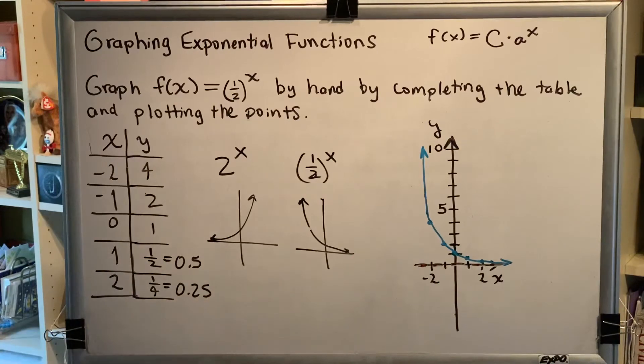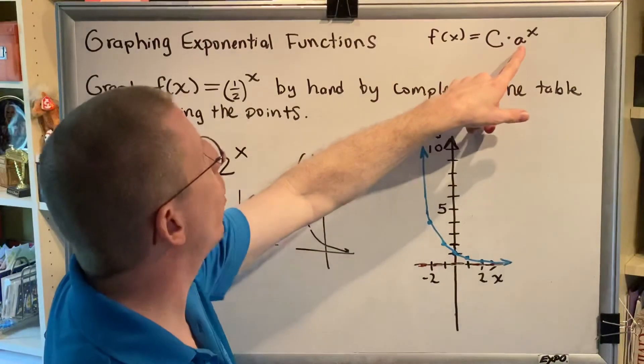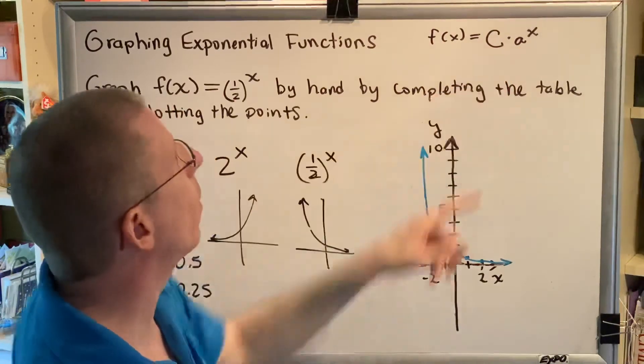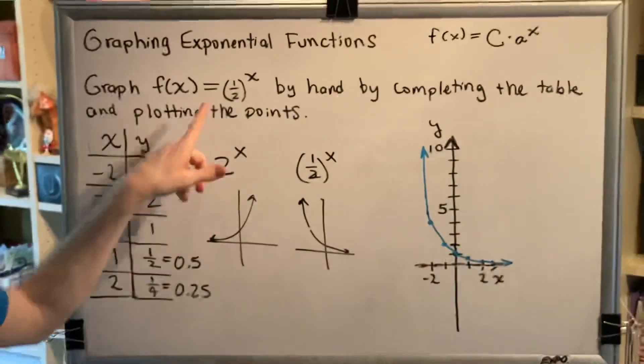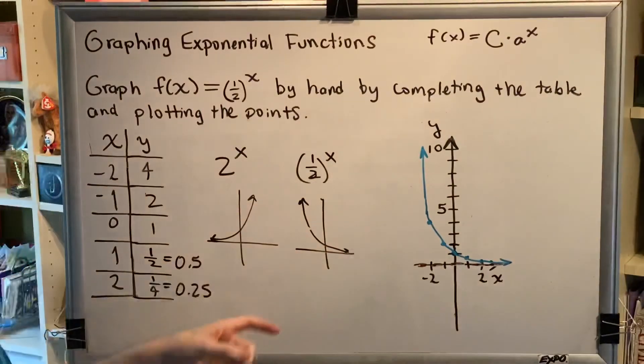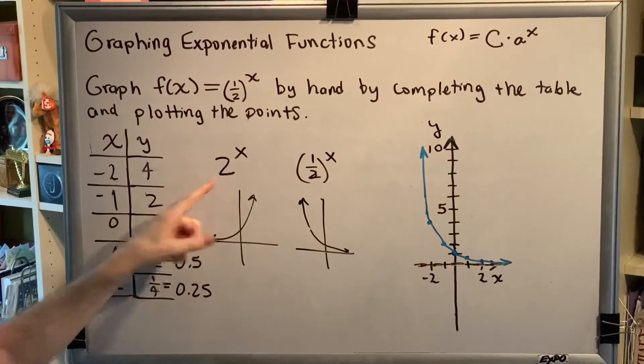This is important to keep in mind. Whenever you're dealing with an exponential function, the base a, the growth factor, must be a positive number. But if that number is less than 1, meaning that it's between 0 and 1, like 1/2, we get this shape. But if it's greater than 1, like 2, we get this shape.